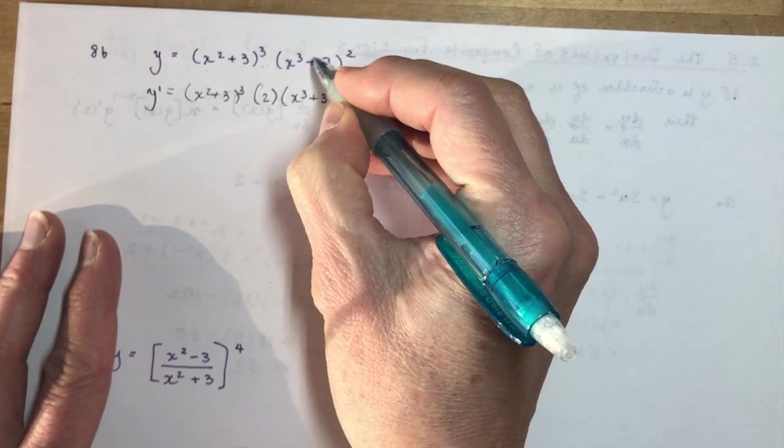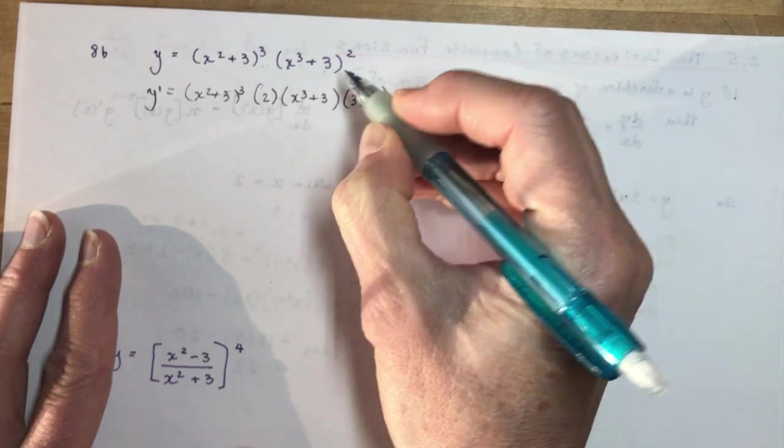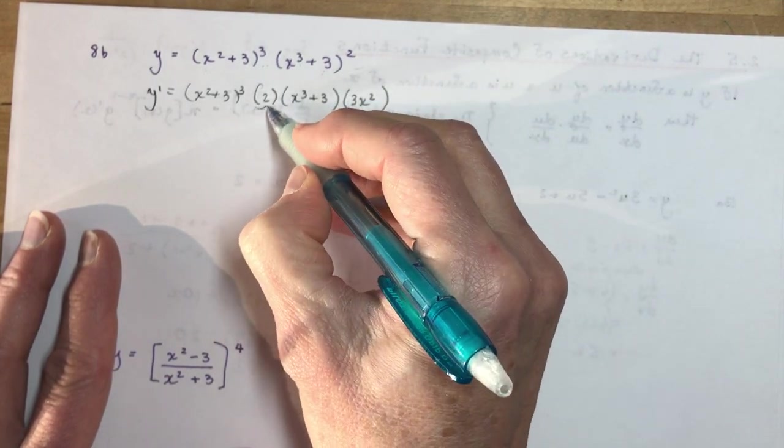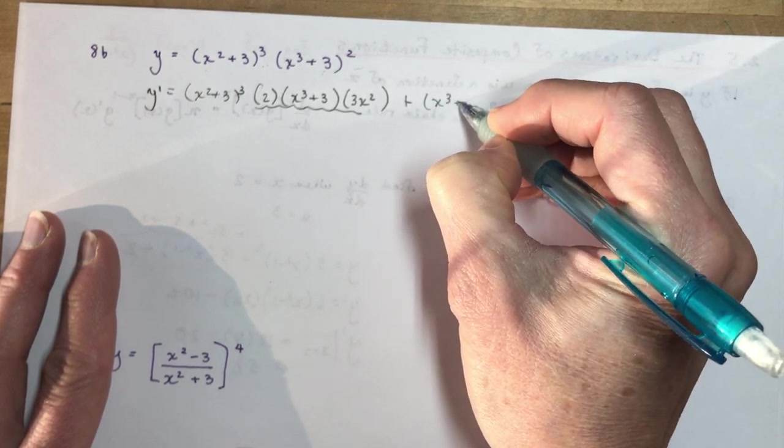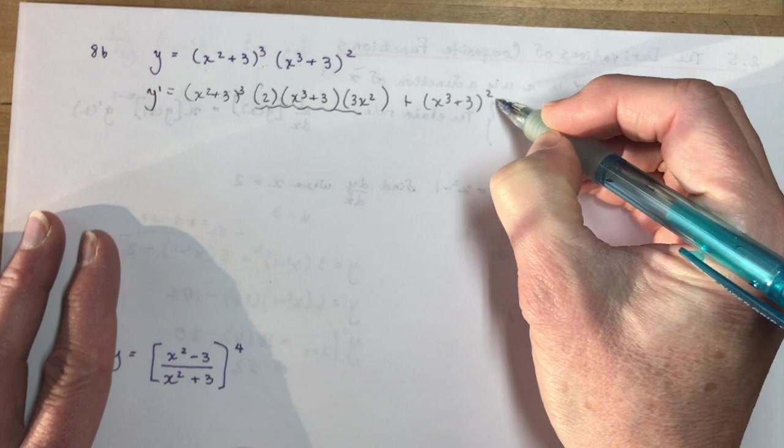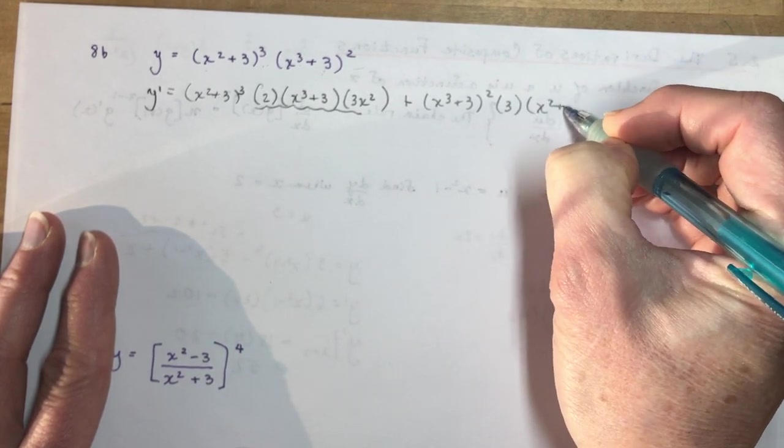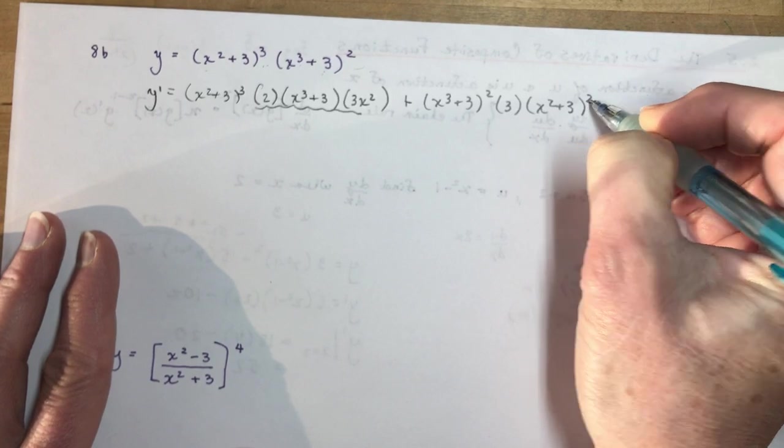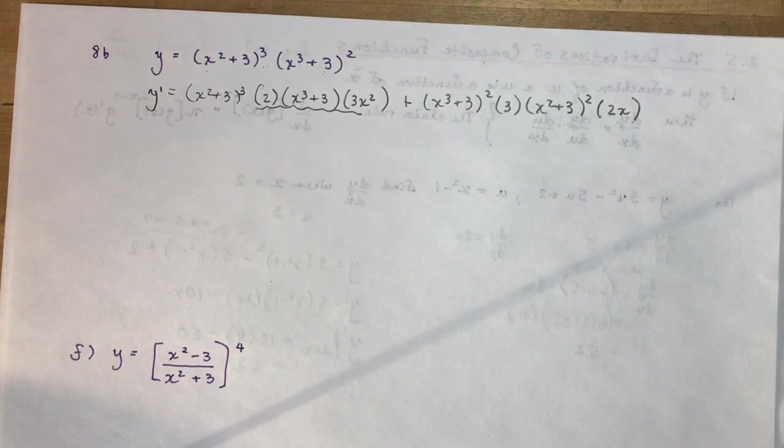Reduce it by 1 is 1. The inside is 3x². So that's the first times the derivative of the second, plus the second, times the derivative of the first. So I have 3. Then I have (x² + 3)². And the derivative of the inside is 2x. Don't forget to do that.